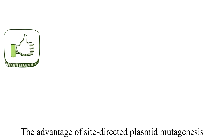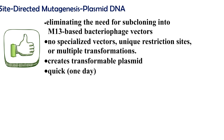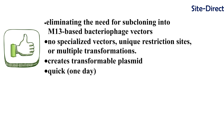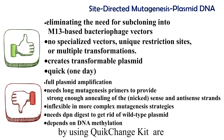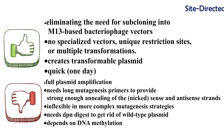The advantages of site-directed plasmid mutagenesis using the QUIKCHANGE kit are: eliminating the need for subcloning into M13-based bacteriophage vectors; no need for specialized vectors, unique restriction sites, or multiple transformations; it creates a transformable plasmid; and it is quick, done in one day. The disadvantages are: it requires full plasmid amplification; it needs long mutagenic primers; it is inflexible for more complex mutagenesis strategies; it needs DpnI enzyme to digest and get rid of wild-type plasmid; and it needs DNA methylation.